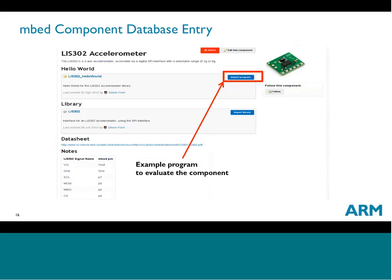Each component entry has a Hello World program, so it's easy to get a piece of hardware, hook it up to a platform, and import that program to evaluate the component — does it behave correctly, does it have the proper resolution or sensitivity needed? If you already know it's the right component, you can just import the library directly into your program and make API calls against that hardware, giving more personality to your program.